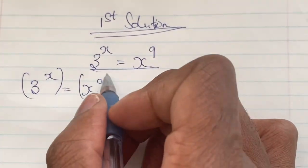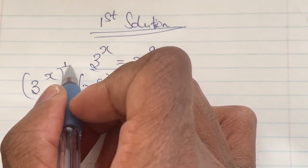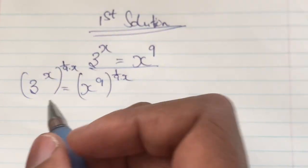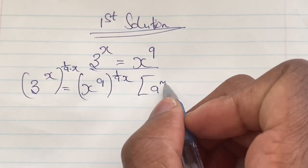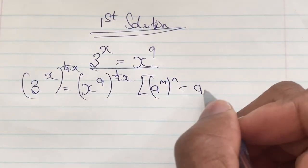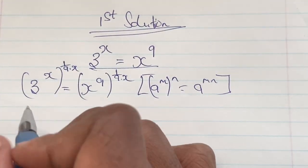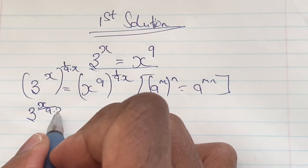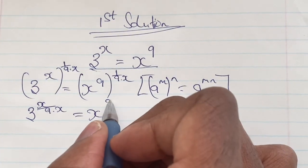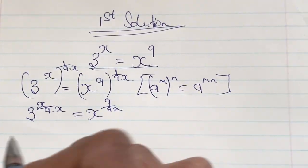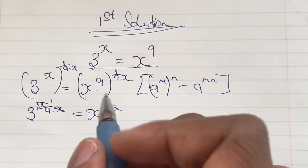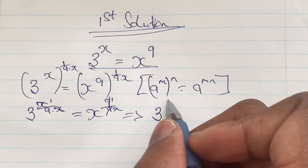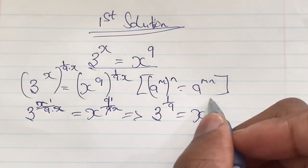We start to solve our equation by bracketing both expressions and raising them to the power of 1 over 9 times x. This allows us to isolate x on one side of the equation. Using the laws of indices, which say that a to the power m raised to n equals a to the power of m times n, we get 3 to the power of x over 9x is equal to x to the power of 9 times x. We bring our powers to the lowest term by cancelling x with x and 9 with 9.